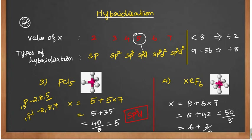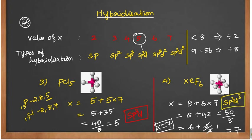If the remainder is 2, we divide it again by 2 to get 1. So 6 plus 1 = 7. If the remainder is any number, divide it by 2, get 1, and add that 1. So the x value is 7, which means sp3d3 hybridization.